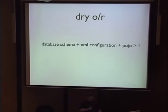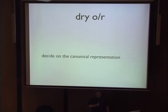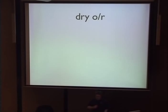Database schema plus XML configuration plus Java object is greater than one. So what you can do is decide on a canonical representation, a single representation, and then generate the others.